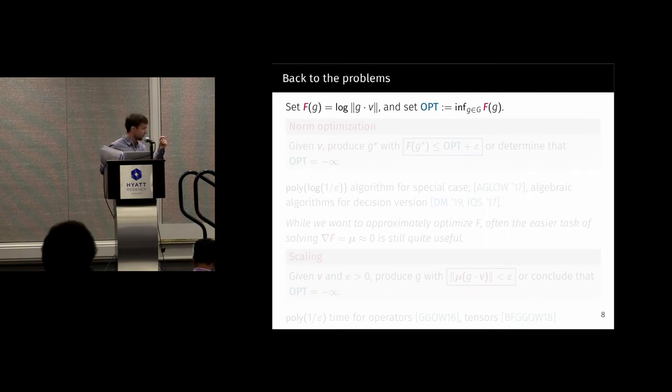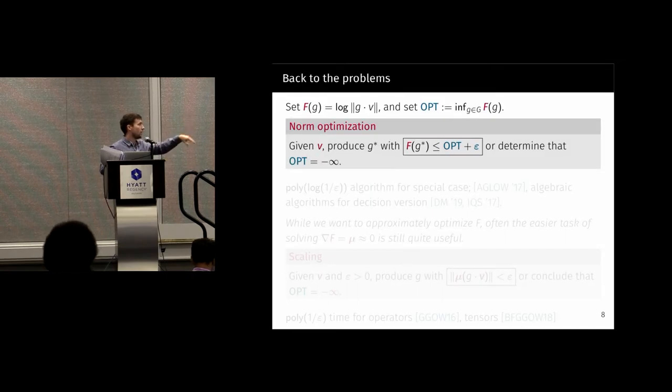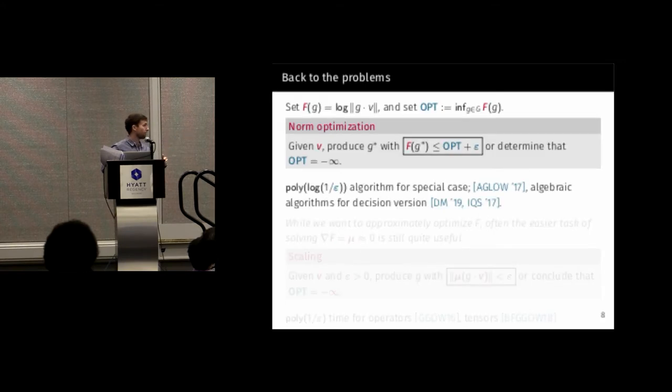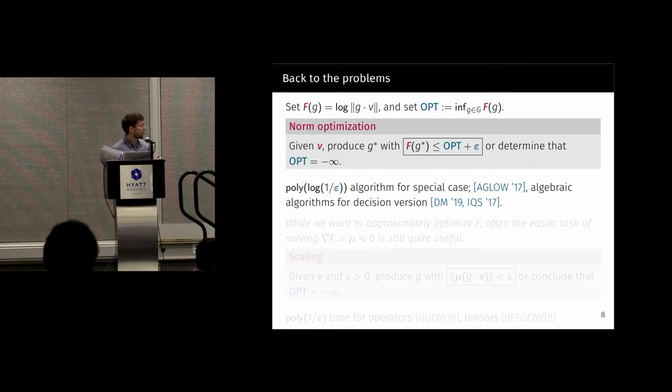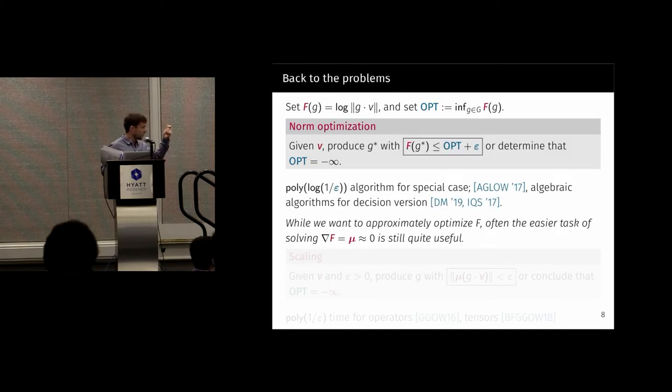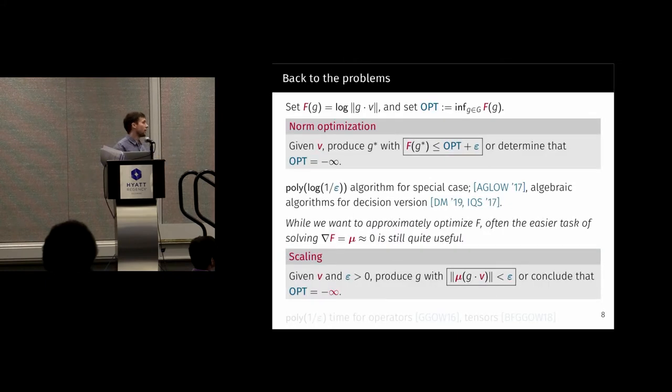Let's define our objective function that we want to optimize to be the log of the norm and just set this parameter opt to be its infimum. Our quest is to, given a vector v, produce g star with the function value being at most opt plus epsilon, or determine that opt is minus infinity, which it could be. There's been a few algorithms for special cases and algebraic algorithms for the decision version, analogous to whether there's a perfect matching. The decision version would be, does opt equal minus infinity or not?